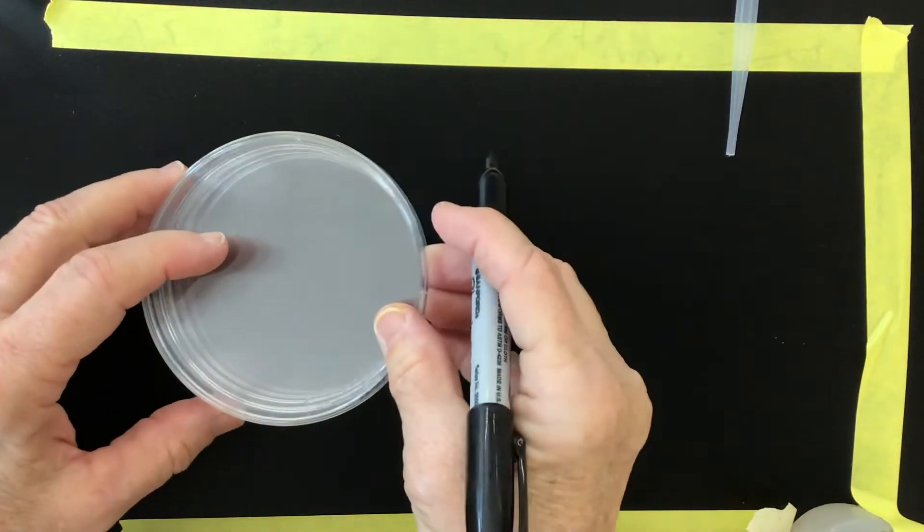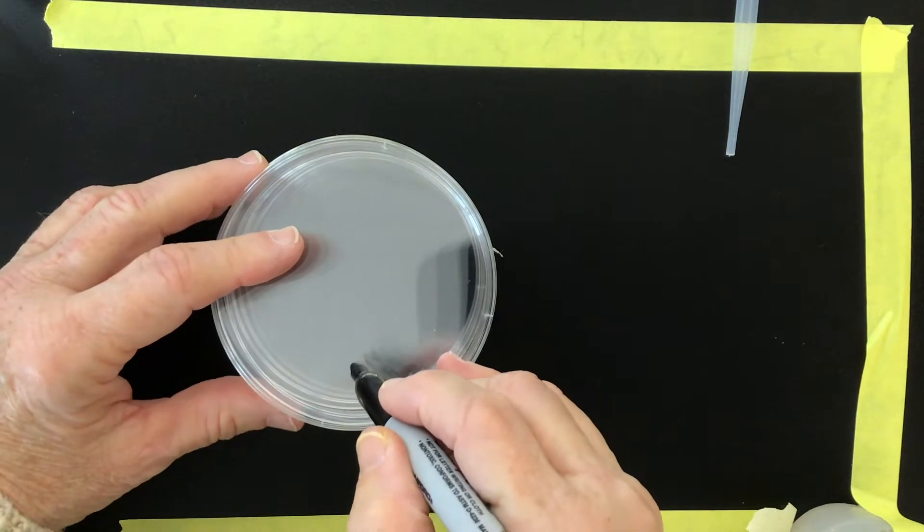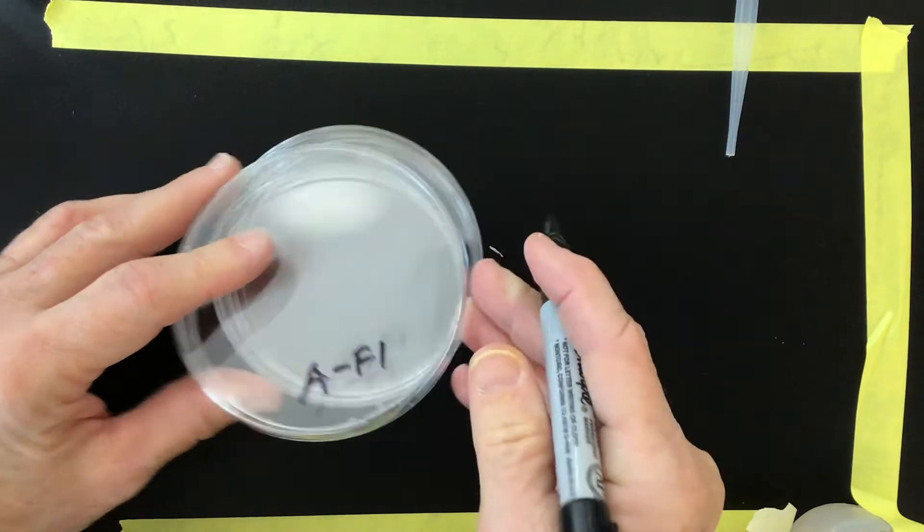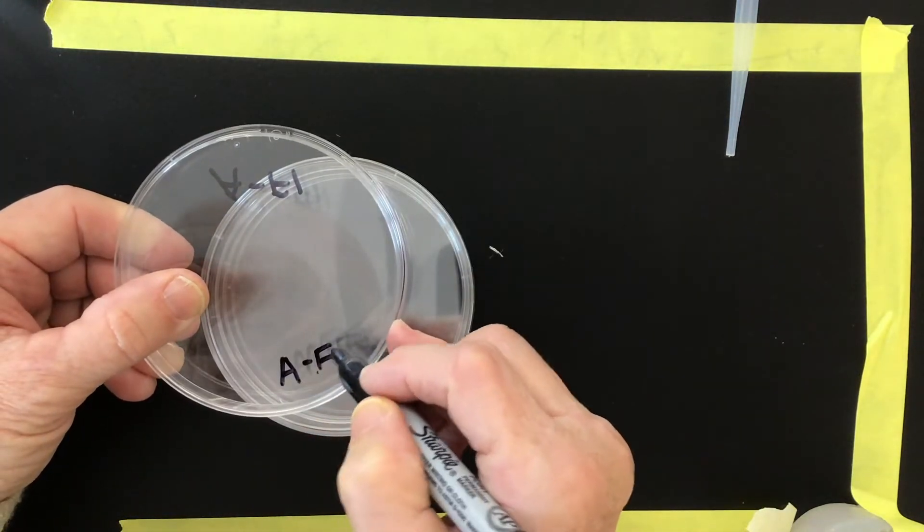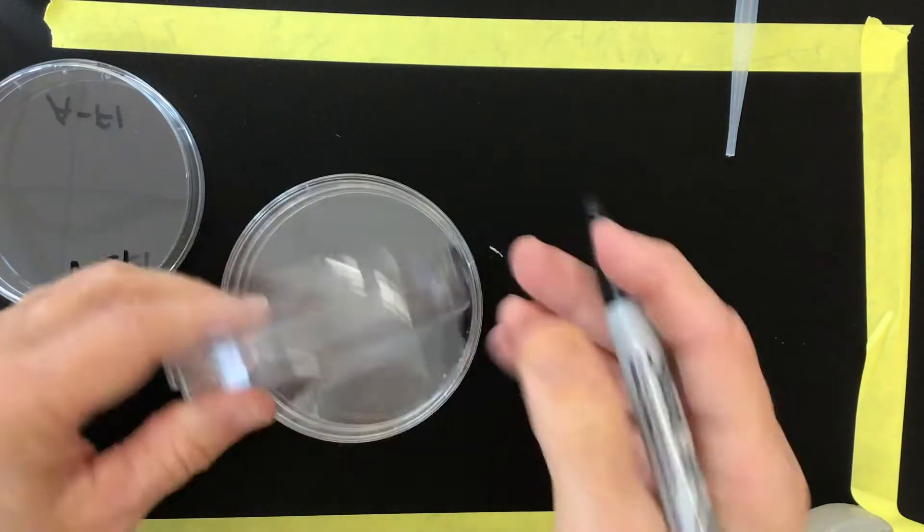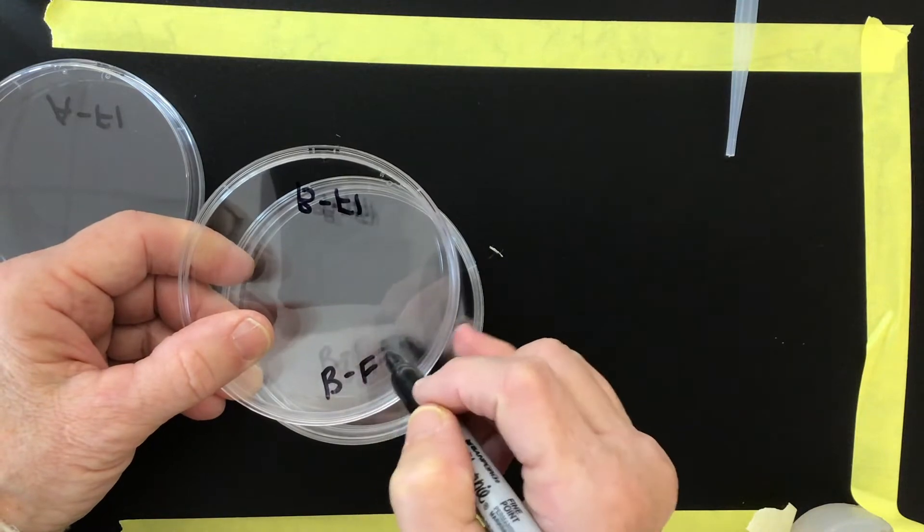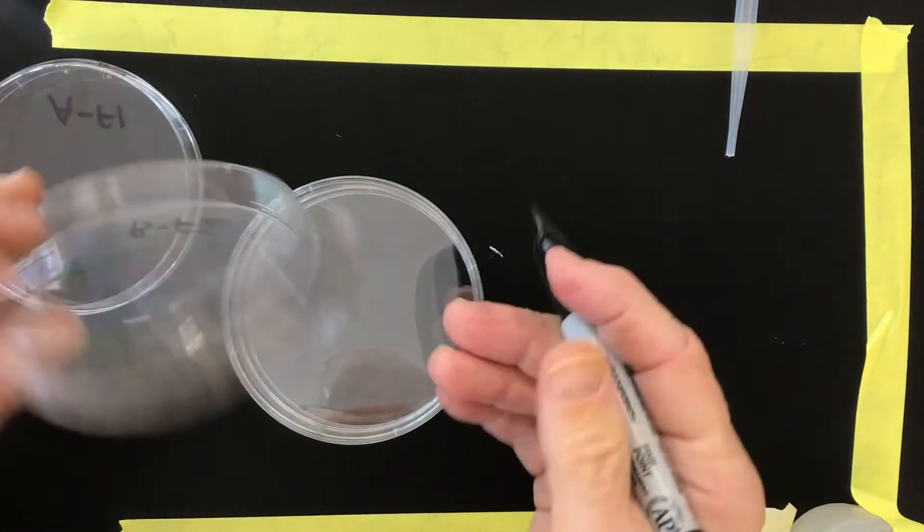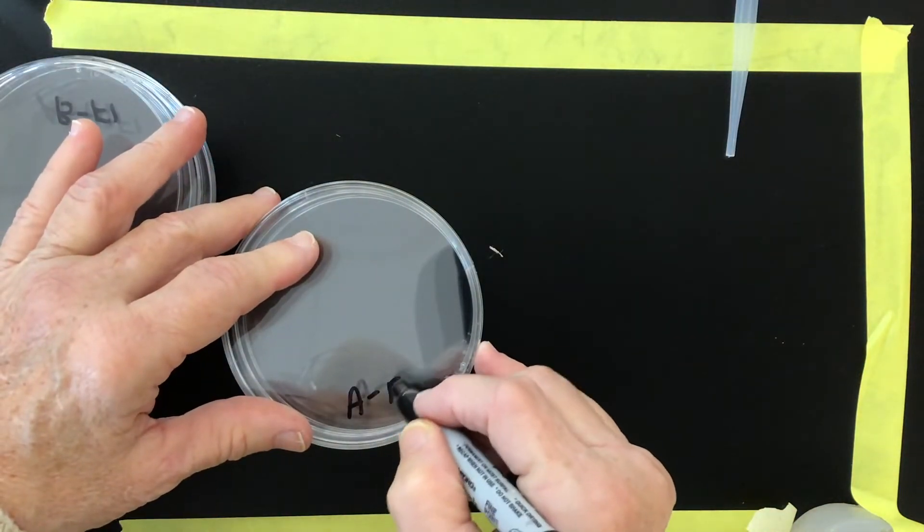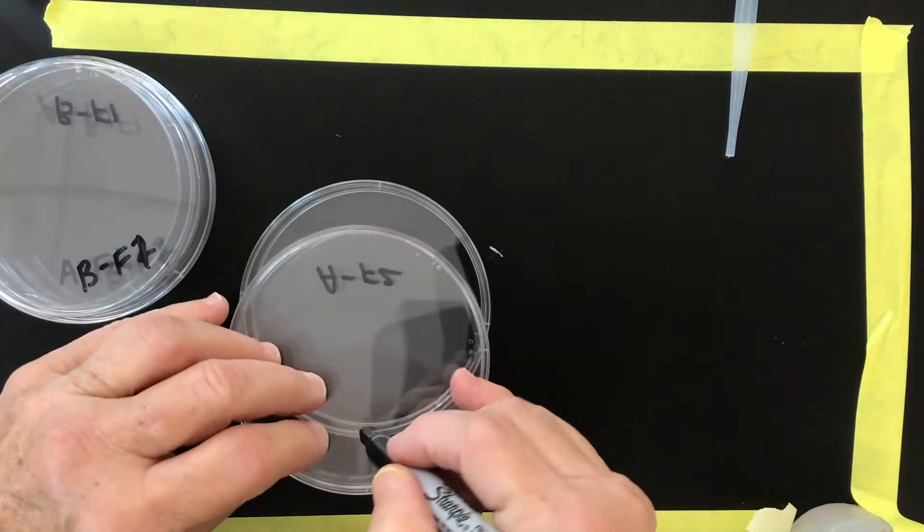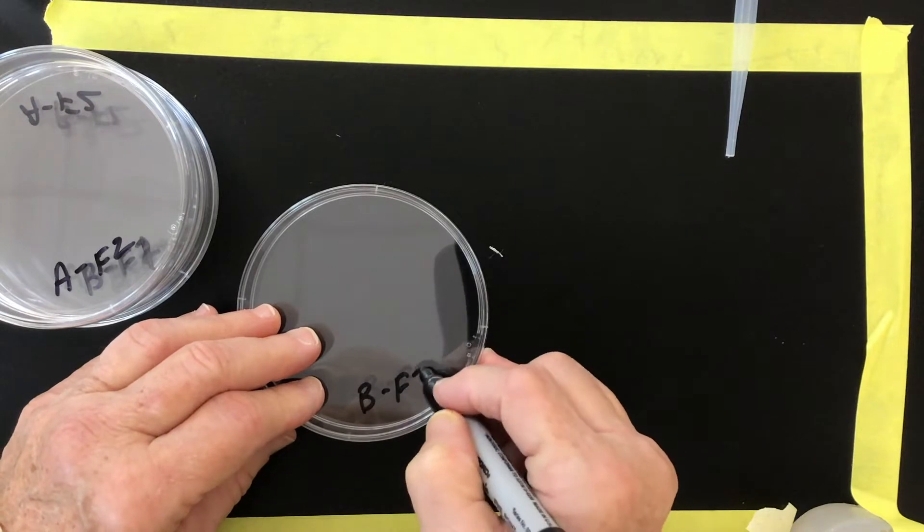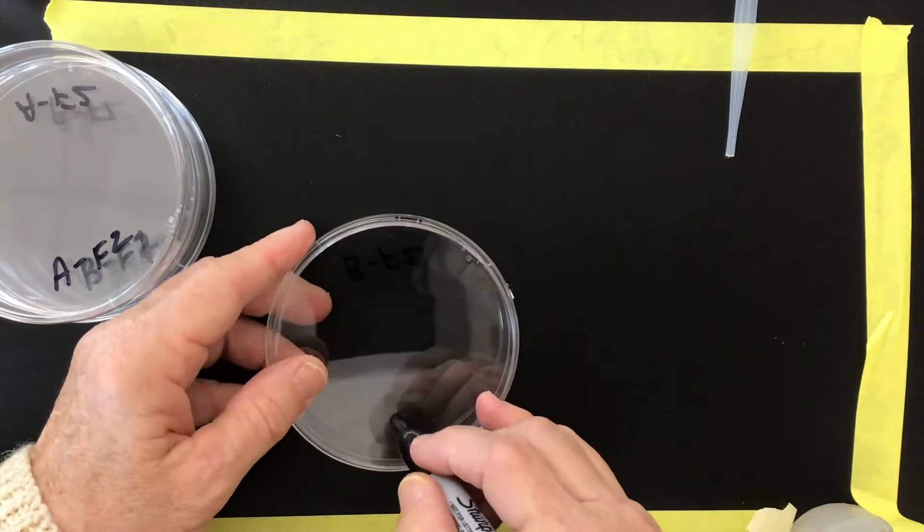Let's start with our petri dishes. The first thing we're going to do is we're going to label them and I'm going to label the top and the bottom. So I'll have an AF1, AF1, BF1, BF2. Better keep that a one on both sides there. AF2, AF2, and lastly a BF2 and a BF2.